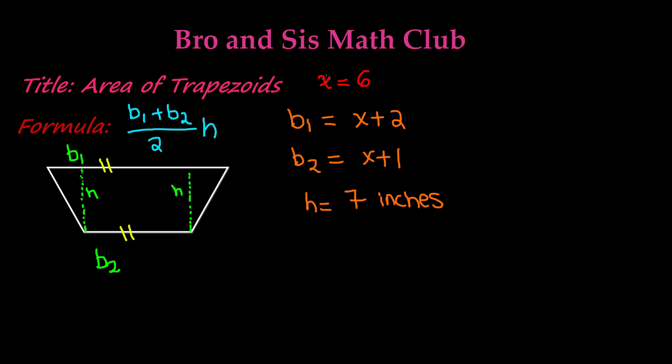So if we substitute the 6 for the x, we will get 6 plus 2, which is 8. 6 plus 1, which is 7, and the 7 remains as it is. So we need to add 8 plus 7, which gives us 15, divided by 2, and multiply it by the height, which is 7.